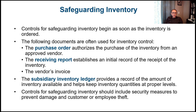When we talk about safeguarding inventory, controls begin as soon as inventory is ordered — not just when it's received. One key document is the purchase order, which is an inventory control document that authorizes the purchase of inventory from an approved vendor. In large companies, they can't order from just any supplier; they must use a pre-approved list of vendors and send them a purchase order specifying the quantity and items needed.